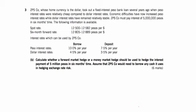Question 3B of the new staff pilot paper for F9 is a numbers question that talks about a forward market hedge and a money market hedge. A forward market hedge means just getting the forward rate, so here are the forward rates. We just need to know whether it's a payment or a receipt that we're talking about.